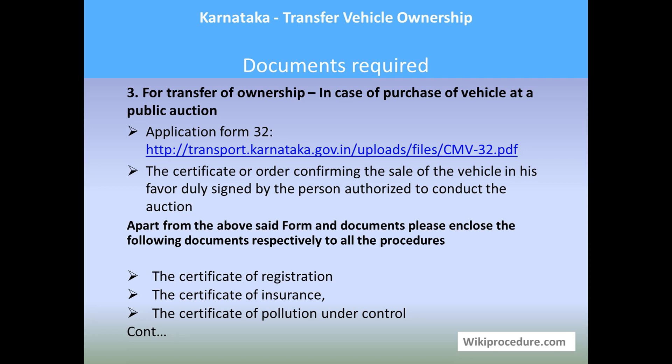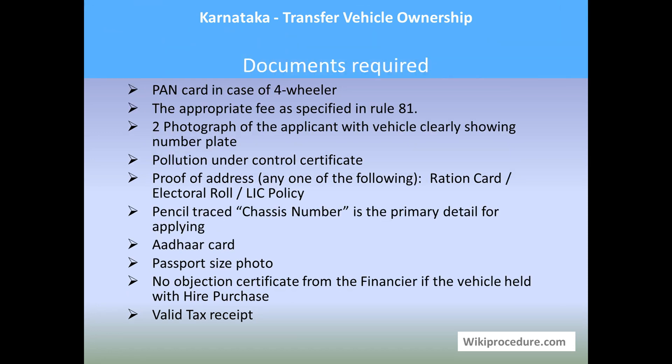Apart from the above forms, please enclose the following documents for this procedure: a certificate of registration, a certificate of insurance, a certificate of pollution under control for the vehicle, a PAN card in case of a four-wheeler, the appropriate fee as specified in Rule 81, two photographs of the applicant with the vehicle clearly showing the number plate, a pollution under control certificate, and proof of address.